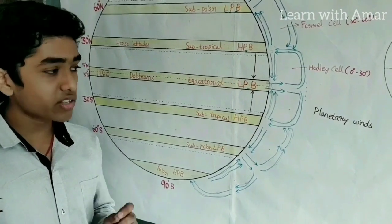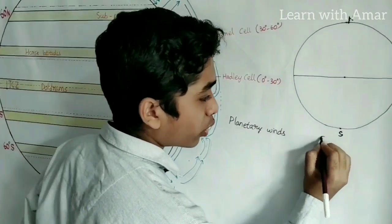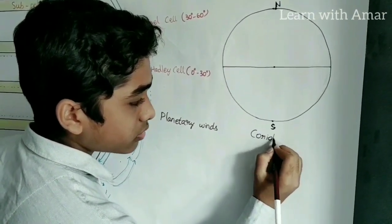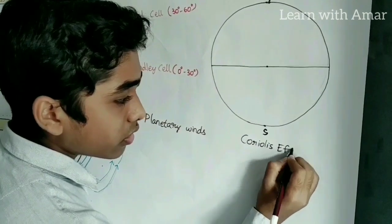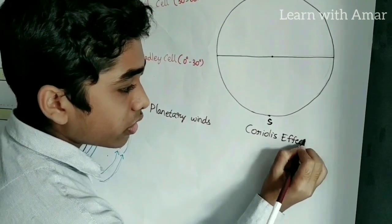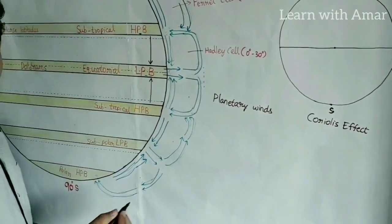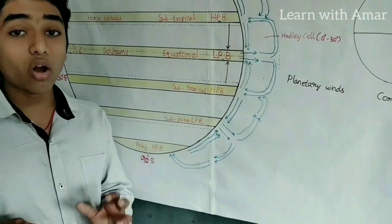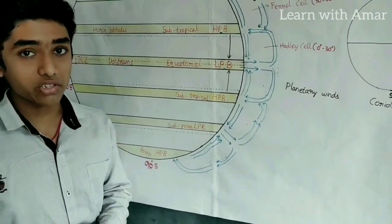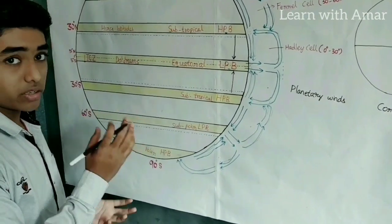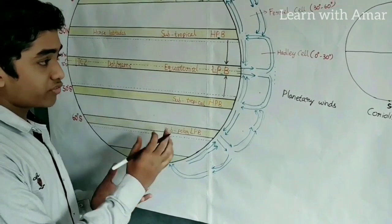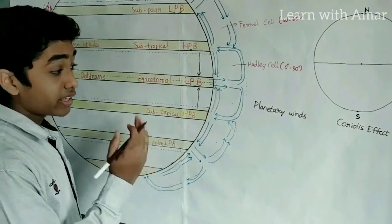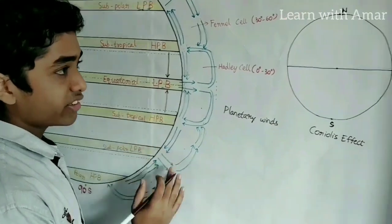What is the Coriolis effect? It is the effect on winds due to the rotation of the earth on its own axis. As the earth rotates, the winds change their direction — they deflect. Let us now see how they deflect.